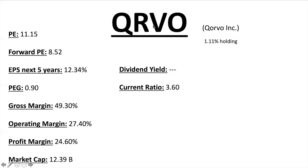Qorvo Incorporated, ticker QRVO, has a 1.11% holding in the ETF. PE ratio 11.15, Forward PE 8.52, EPS next five years 12.34% — dividing that into the PE gives a PEG ratio of just under one at 0.90. Gross margin 49.3% — around that 50% level. Operating margin 27.0% — over that 20-25% mark. Profit margin just under 25% at 24.60%. Great margins, market cap $12.39 billion, no dividend, current ratio 3.60.